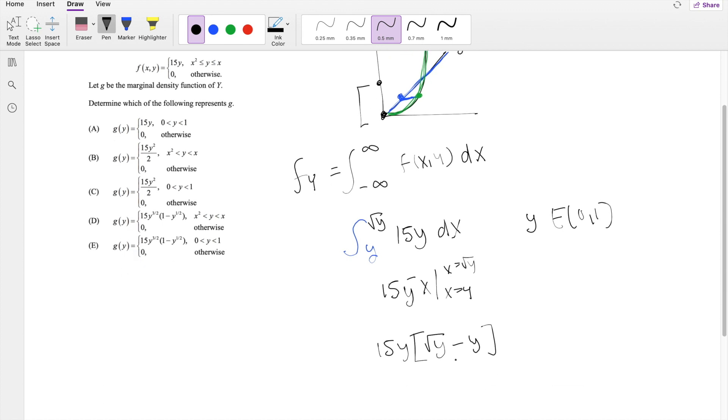And we can actually factor out 1 half. So 15y to the 3 halves. And when you factor out 1 half, this becomes 1 minus y to the 1 half. And we know that y exists between 0 and 1.